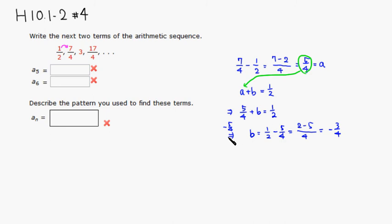So we found the form. So it's going to be an, a is 5 over 4n, plus b, b is negative 3 over 4. So we found an.